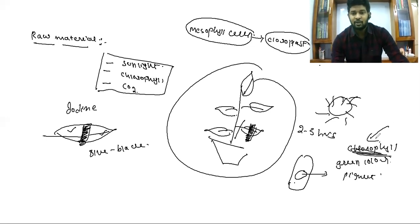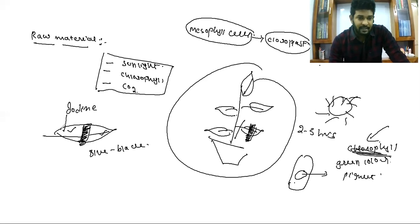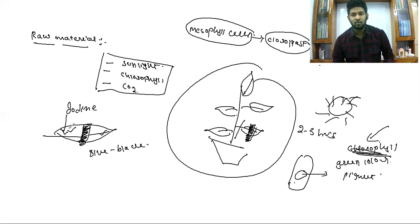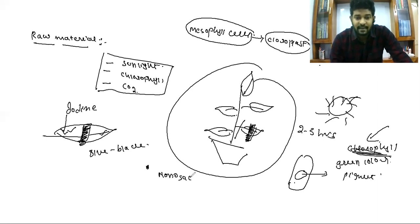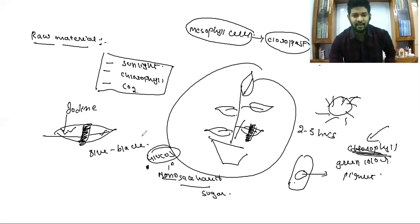This chlorophyll has the ability to receive sunlight, so the initiation of photosynthesis begins in the chlorophyll by absorbing sunlight. It receives sunlight and finally produces glucose. That glucose which is produced is a monosaccharide — mono means single and saccharide means sugar, so glucose is a simple sugar.